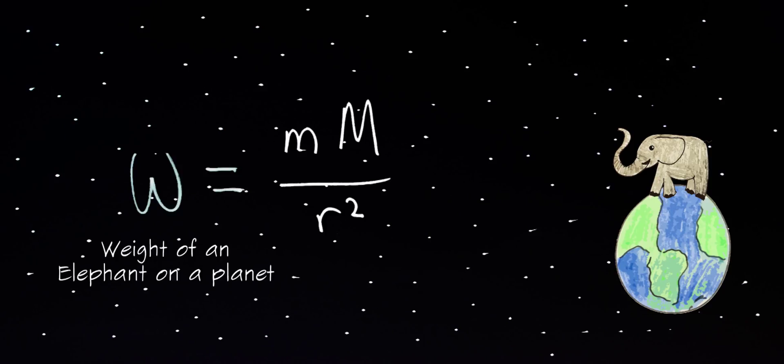Weight equals small m times capital M divided by r squared. Small m is the mass of the elephant which measures how much matter exists in the elephant. It is constant,